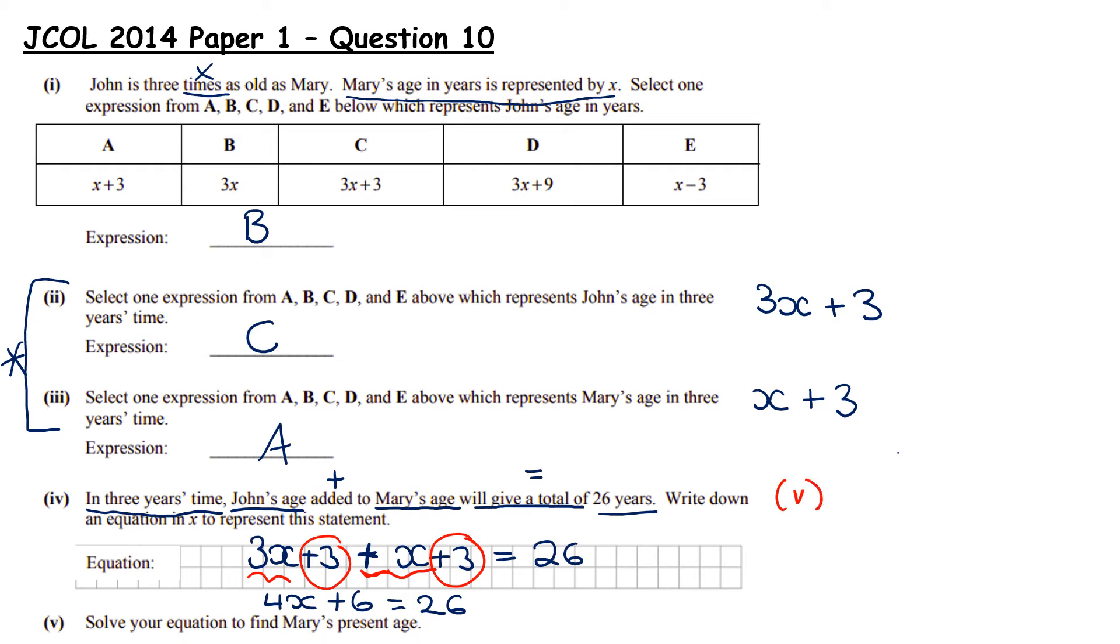The last part, part V, asks us to solve that. So we have 4x plus 6 equals 26. We're going to take away a 6 from both sides, so our vertical balancing. We get 4x equals 20. Divide both sides by 4. And our final answer is x equals 5. And remember, x was Mary's age. So Mary is currently 5.